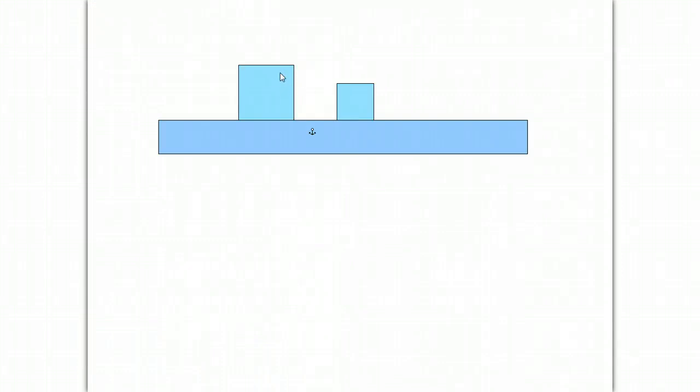I have here on interactive physics two boxes. This one's going at 4 meters per second to the right, this one's going at 6 meters per second to the left. The mass of this one is 4 kilograms, the mass of this one is 1 kilogram. And what we're going to see is another collision.